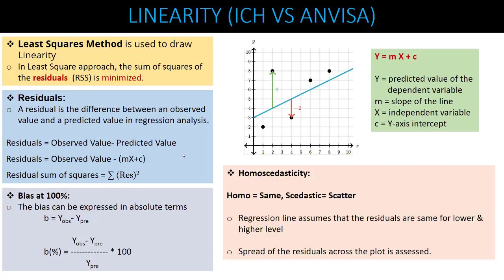The next parameter is homoscedasticity. Breaking the word down: 'homo' means same and 'scedastic' means scatter. A regression model assumes that the residuals are the same for lower concentrations as well as higher concentrations. You need to assess whether your residuals are spread similarly across the plot — that assessment is called homoscedasticity.